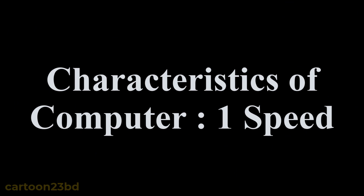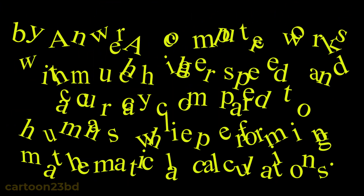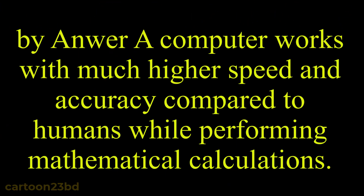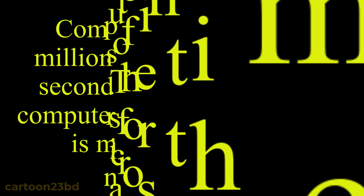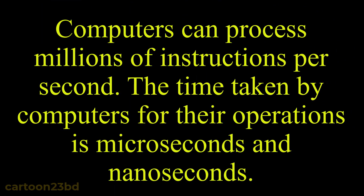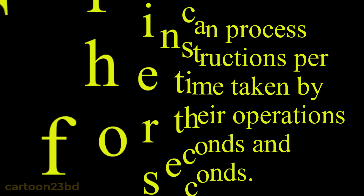Characteristics of Computer 1: Speed. A computer works with much higher speed and accuracy compared to humans while performing mathematical calculations. Computers can process millions of instructions per second. The time taken by computers for their operations is measured in microseconds and nanoseconds.